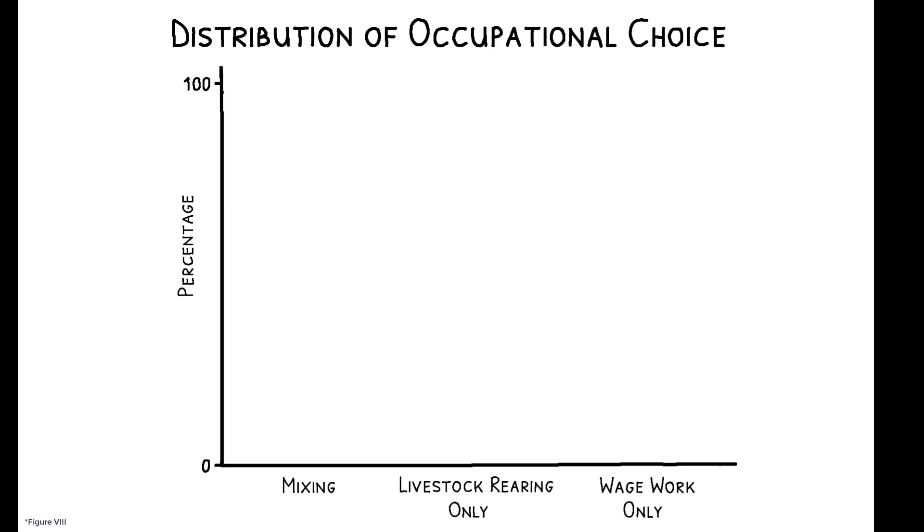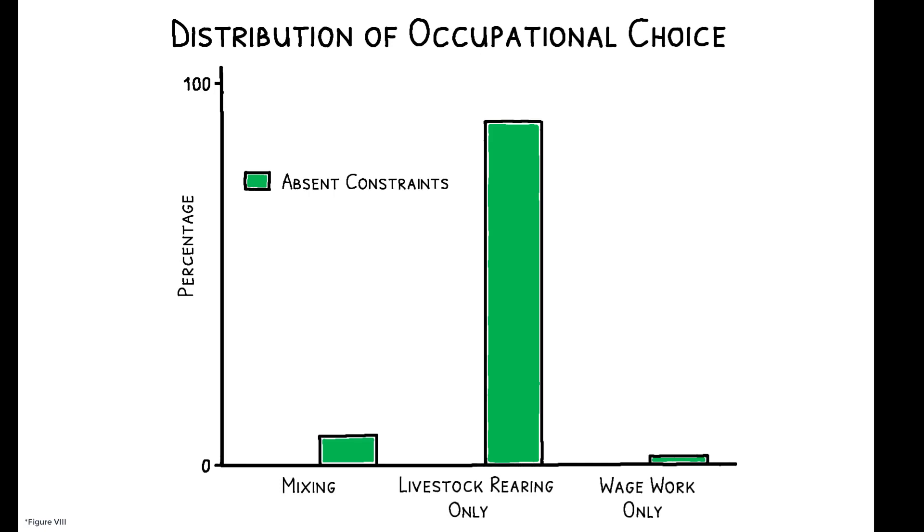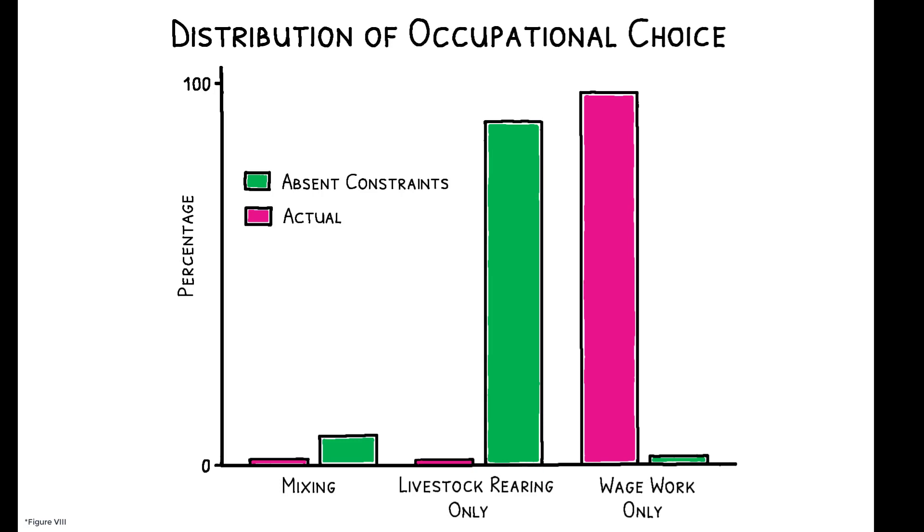In line with this, there is substantial labor misallocation at baseline. Estimates from a model of occupational choice indicate that absent constraints, 90% of poor households in this setting would optimally specialize in livestock rearing, and only 2% would specialize in casual wage labor. But the actual distribution is wildly different.